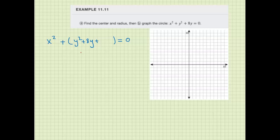So we're going to take the coefficient of the y, the 8, divided by 2, and square it. 4 squared equals 16, so we're going to add 16 here, and also on the other side of the equation, so we keep the balance.